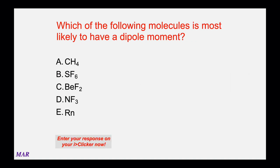Which of the following molecules is most likely to have a dipole moment? A dipole moment is a measure of how polar a molecule is. This question is essentially asking which molecule is polar. Work through the Lewis structures to find the answer. Pause the video, do the Lewis structures, and when you're ready, unpause it.